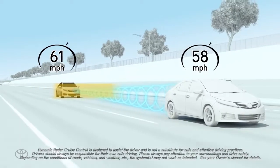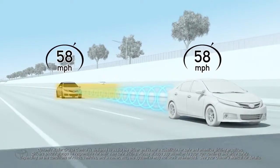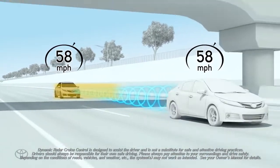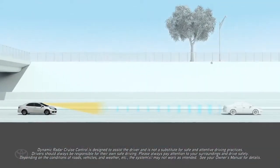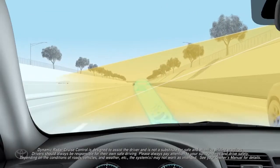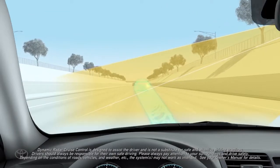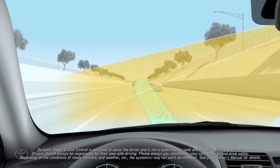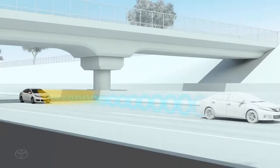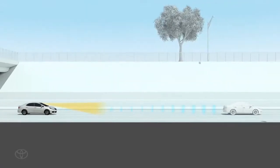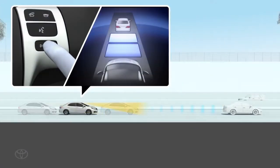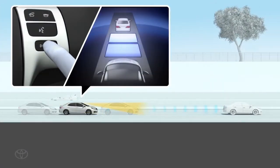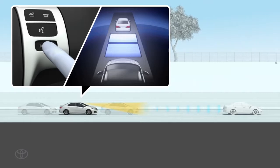The system will then respond to changes in the speed of the vehicle ahead in order to help maintain the vehicle-to-vehicle distance set by the driver or return to the preset speed once the road ahead is clear. The vehicle-to-vehicle distance between your vehicle and the preceding vehicle can be set by operating the vehicle-to-vehicle distance control.